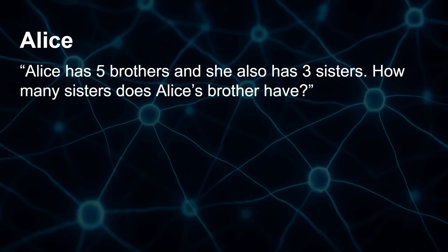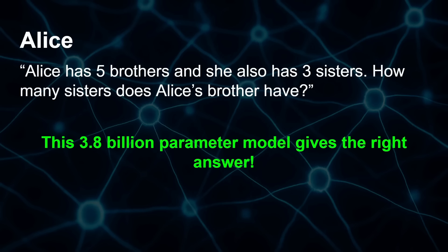The big news for me is a question I've been throwing at language models for a long time: 'Alice has five brothers. She also has three sisters. How many sisters does Alice's brother have?' Most small models answer three, as did early versions of GPT-4, Grok, and Gemini. Thinking models like O3 Mini give the correct answer of four — but I've never been able to get a locally-running model to give the right answer, until now. This 3.8 billion parameter model gets it right.